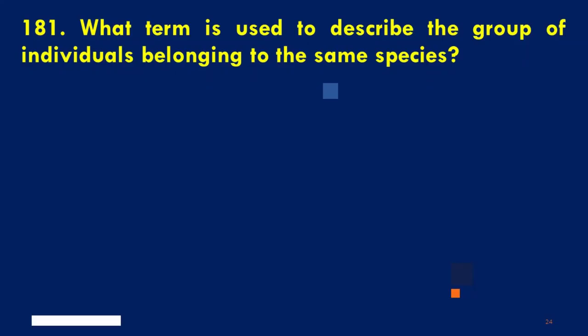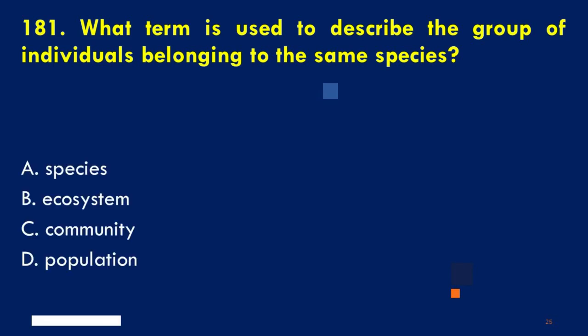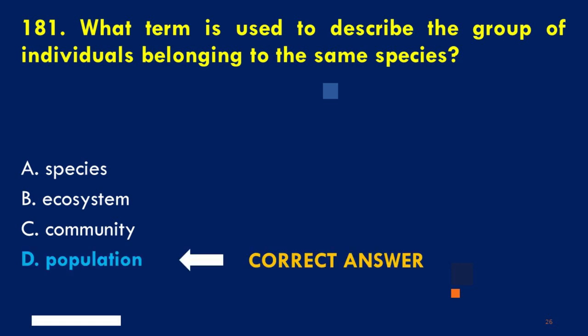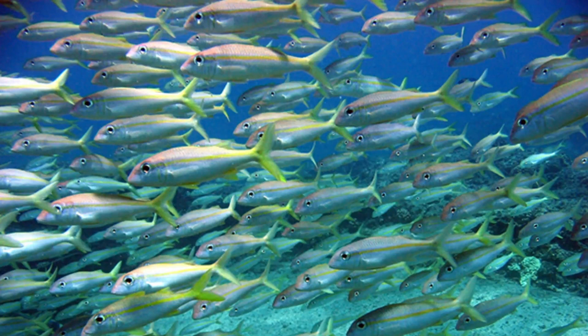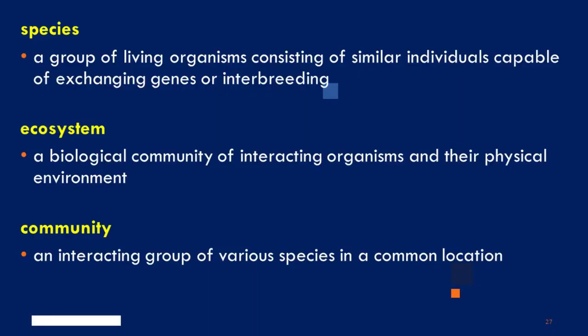What term is used to describe the group of individuals belonging to the same species? A. Species, B. Ecosystem, C. Community, D. Population. The correct answer is D. Population. Population is also the number of individuals of a particular species in an area. Limiting factors like the availability of food, water, and shelter can impact an organism's population. The term species is a group of living organisms consisting of similar individuals capable of interbreeding. The ecosystem is a biological community of interacting organisms and their physical environment.